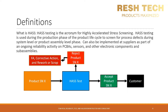Let's go ahead and define HASS. What is HASS? HASS is Highly Accelerated Stress Screening. HASS testing is used during the production phase of the product life cycle to screen for process defects during system level or product assembly level phase. It can also be implemented at suppliers as part of an ongoing reliability activity on PCBs, sensors, and other electronic components and sub-assemblies. For products that are too large to apply this type of testing, you can implement HASS into your supplier ongoing reliability testing for your components and sub-assemblies. Below is a high-level process that shows how HASS is integrated into a production process to weed out defective parts, workmanship issues, and manufacturing equipment-induced process issues.